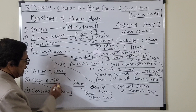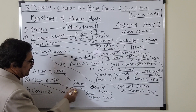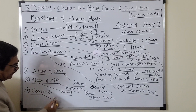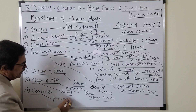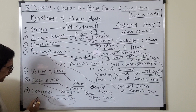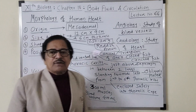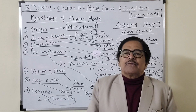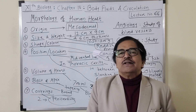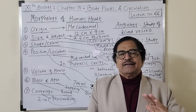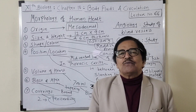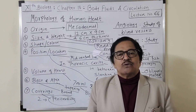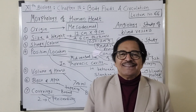The broad part towards the upper side is the base, and the tapering part is there towards the lower left. Regarding coverings, we shall learn in detail in the next lecture — the double covering is called pericardium. Try to remember all these morphological points of the heart; they are very important from an exam point of view. Do like, share, and subscribe to Kate Sir Chemistry and Kate Sir Biology channels.